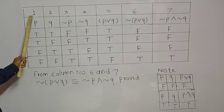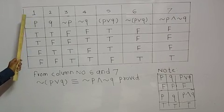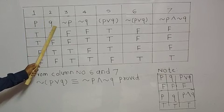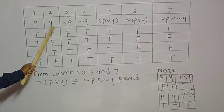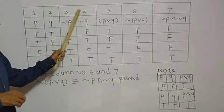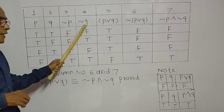Column number 1 for P, 2 for Q, 3 for negation of P, column number 4 for negation of Q.